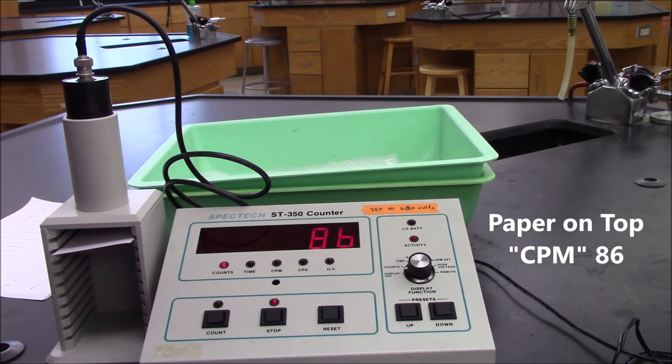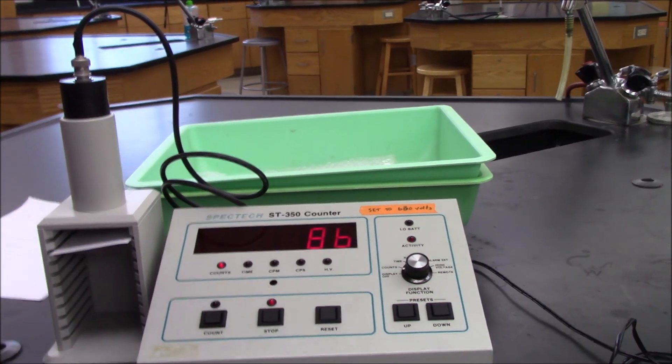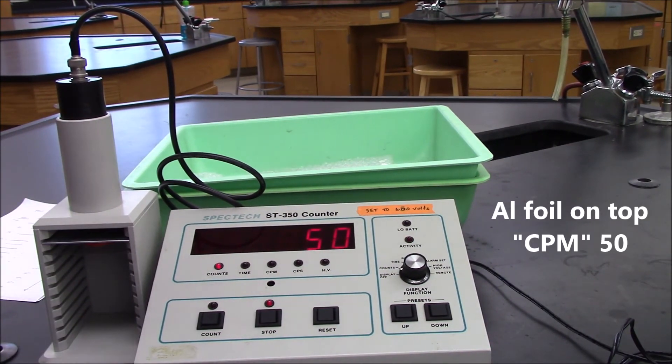Now I'm going to put another blocking material in between, and we'll see what happens. So here's what we got with the sample of a piece of aluminum metal as a blocker. You can see we've blocked even more of the alpha particles.